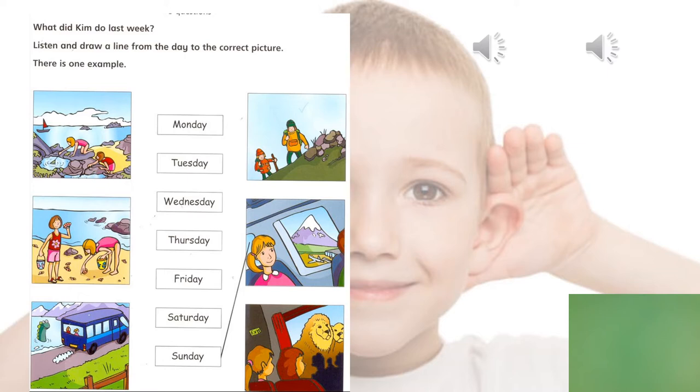Okay, so we're going to go directly into the next exercise. What did Kim do last week? Listen and draw lines from the day to the correct picture. The first one, remember, we're going to listen to an example that it's already done for us. That it's Sunday. Can you see that line? Okay, let's listen to it. Part three. Look at the pictures. What did Kim do last week? Listen and look. There is one example.